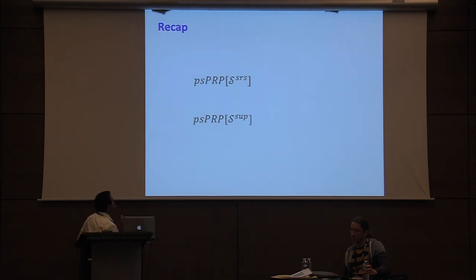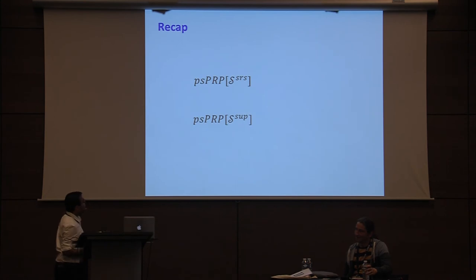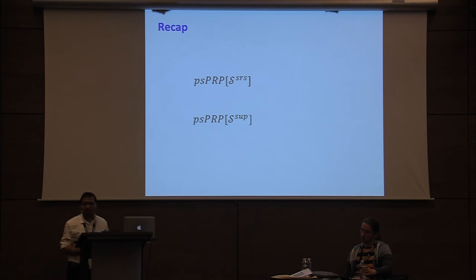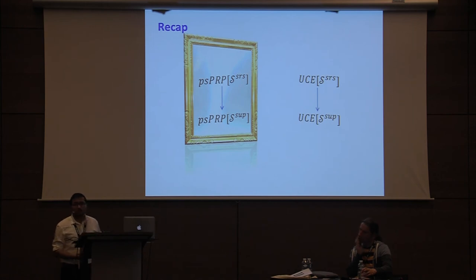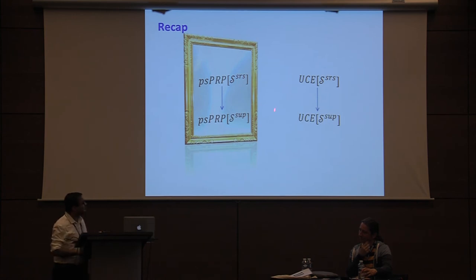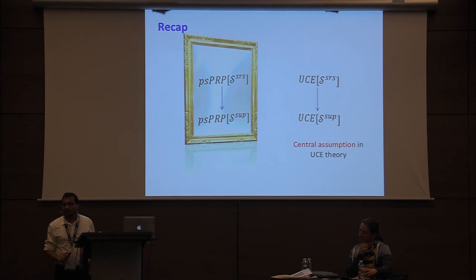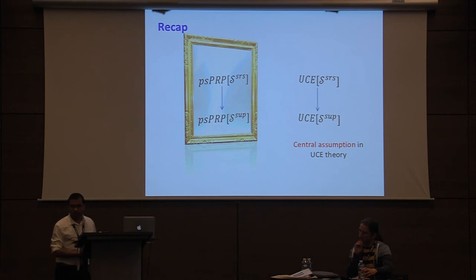Just to recap: we have defined two new assumptions on permutations called PSPRP for reset sources and PSPRP for unpredictable sources, where reset security is the stronger notion. These are mirror images of the UCE notions for reset secure sources and unpredictable sources. Those UCE notions have played a central role in UCE theory with many applications, so a natural question is whether these two can play a central role as well — and in fact they do.